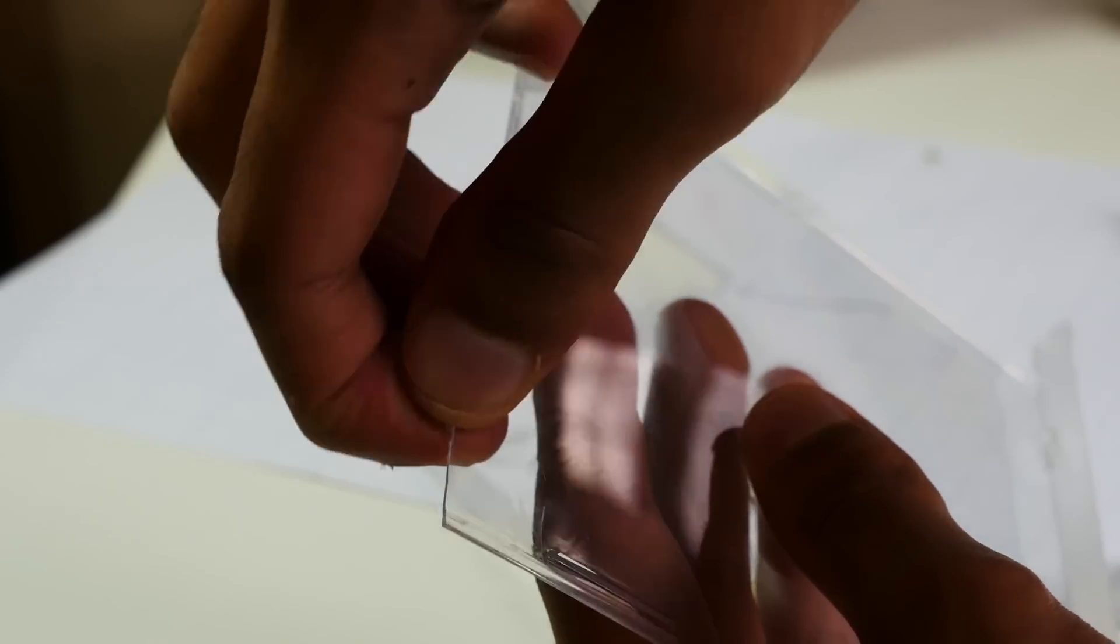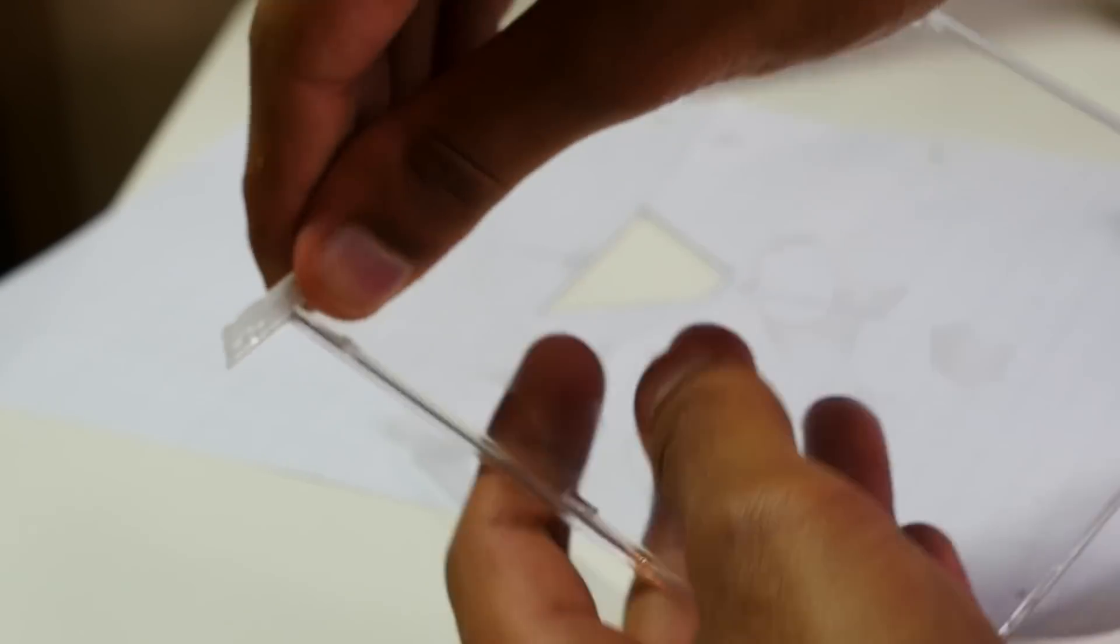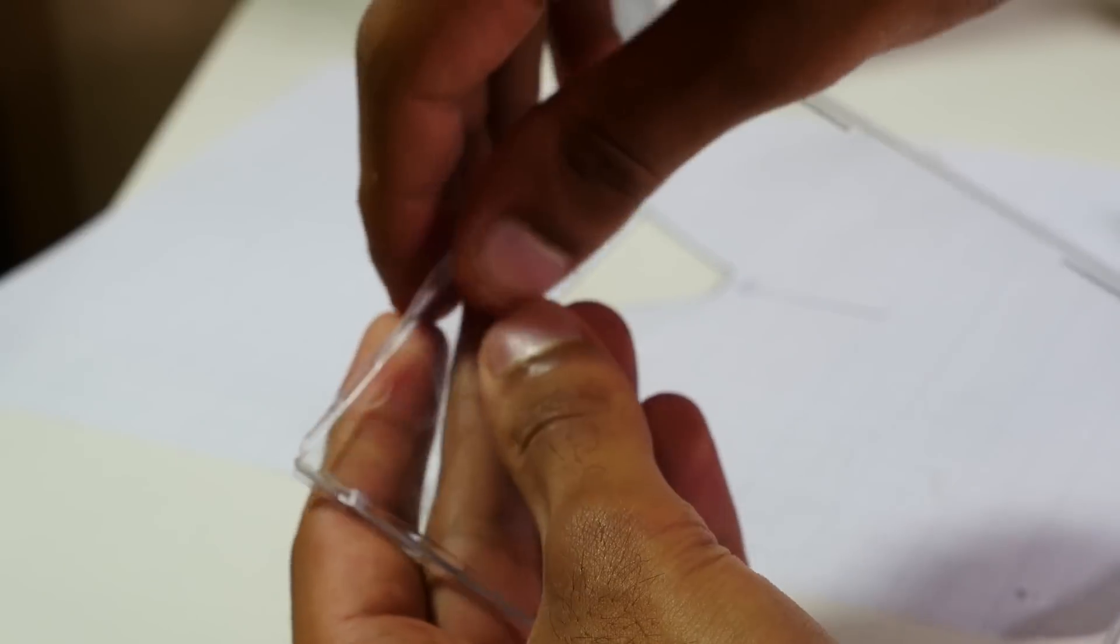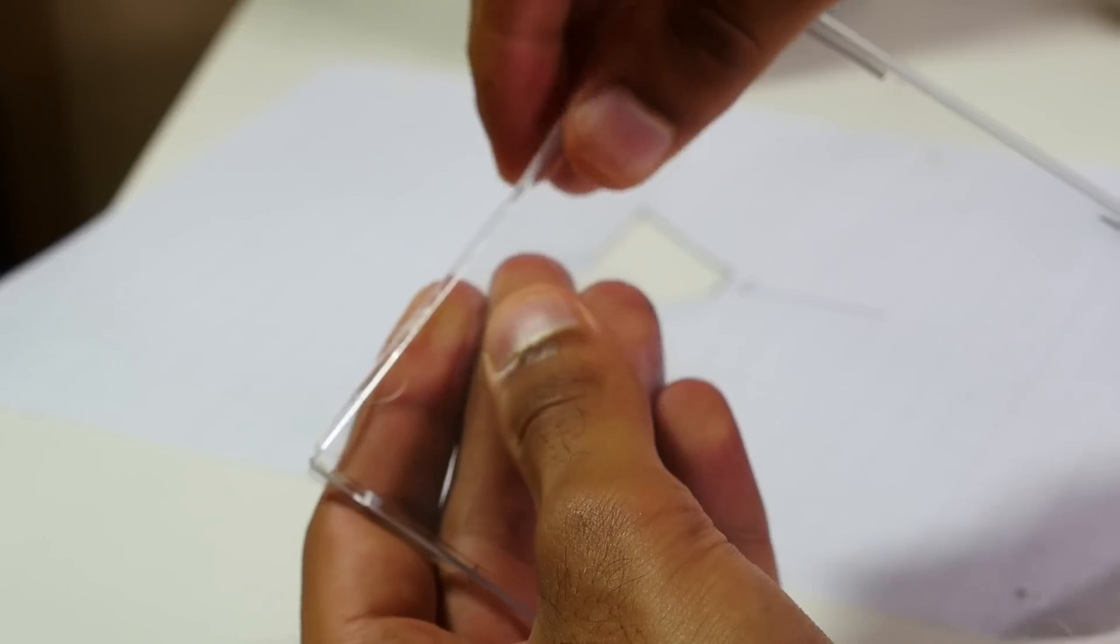So you get your little paper template, and then just before we start cutting, take off the sides of the CD case, because they're just going to get in the way, you don't need them at all.